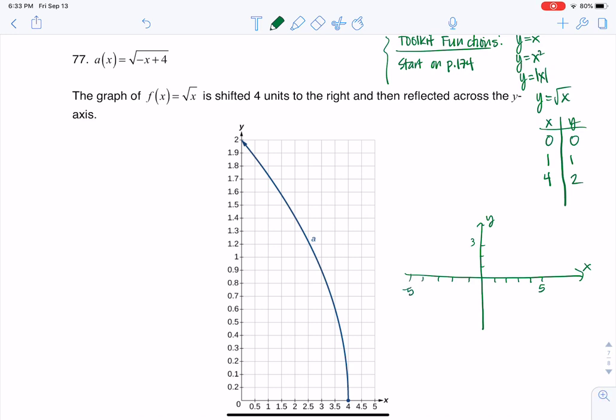If I wanted to graph that function, here we go. We had 0, 0, 1, 1, and then 4, 2. So it looks something like that. That is your basic square root function.